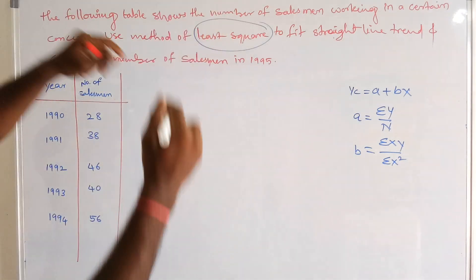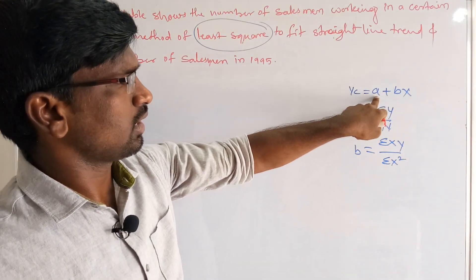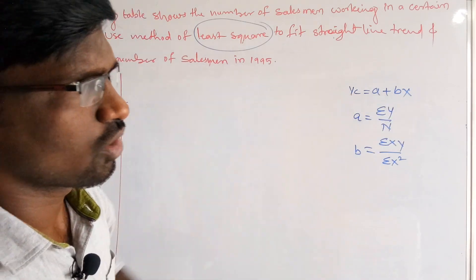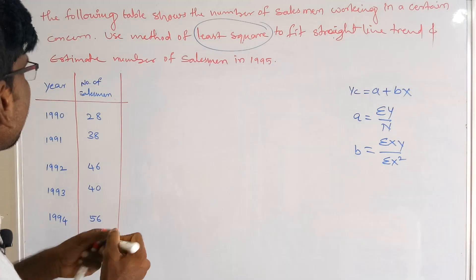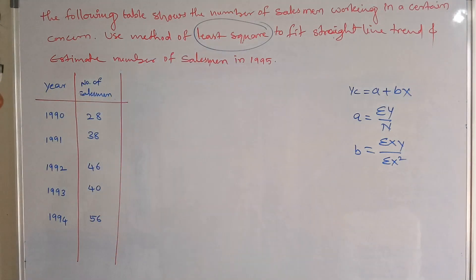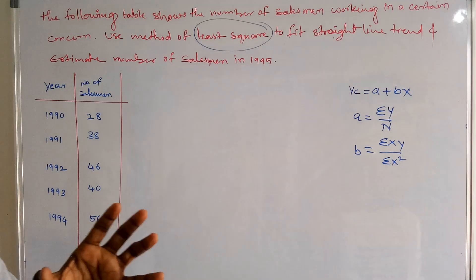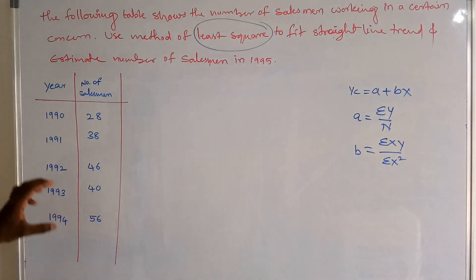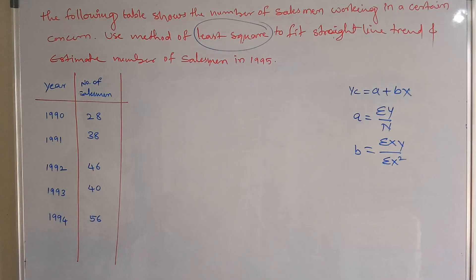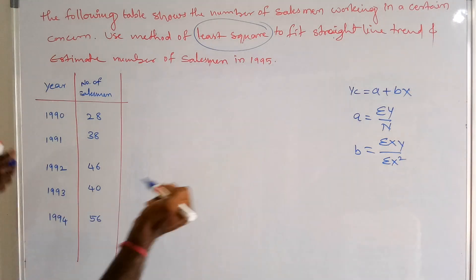In the least square method there are two types of questions: one with an odd number of years and one with an even number of years. In this question we have five years of data — 1990 to 1994 — which is an odd number of years. The even number of years case works differently.